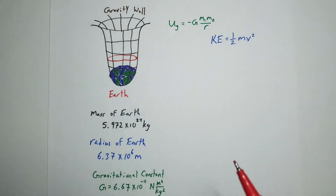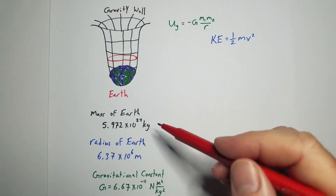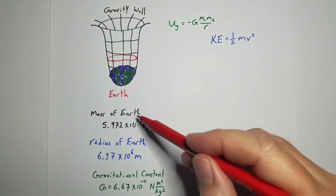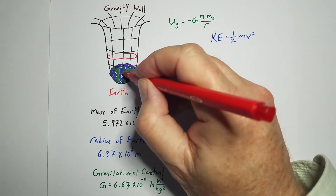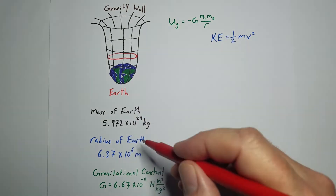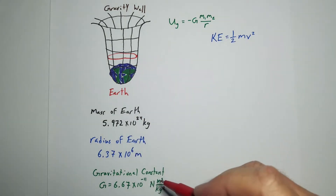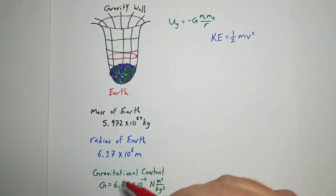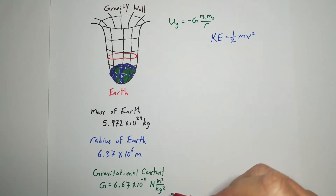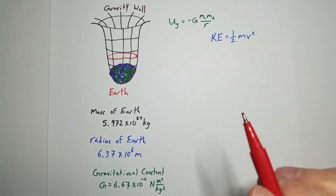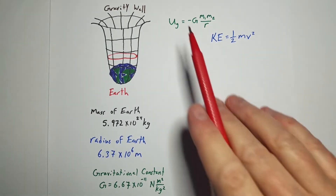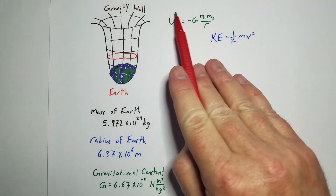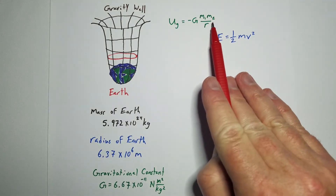We need to do a couple of things. First of all, some numbers we need to know: we need to know the mass of the Earth, the radius of the Earth — that's from the center of the Earth out to the surface — and the universal gravitational constant, which is 6.67 times 10 to the negative 11. But here's where we get into actually how to figure it out: this equation for gravitational potential energy.